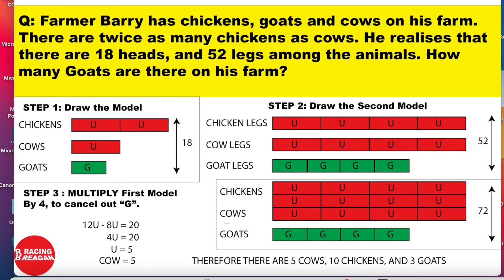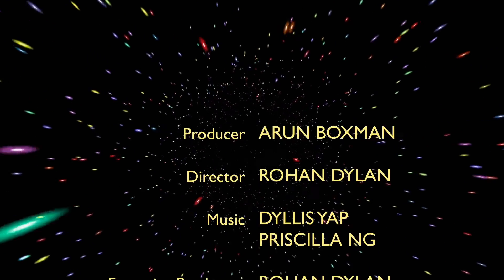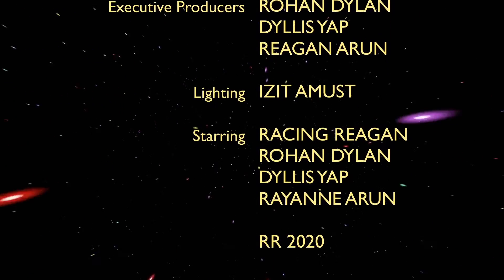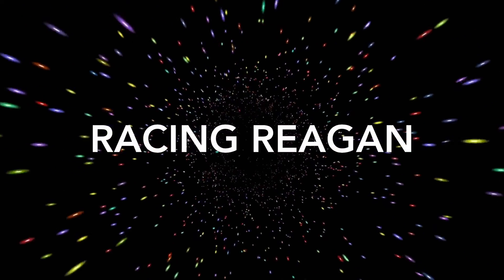Now you know how many chickens there are. Chickens have twice as many as cows, so chickens equal 10. To find the goats, since there are 18 heads total and each animal has 1 head, there are currently 15 heads accounted for (10 chickens + 5 cows). So there are 3 goats. That's how you solve the question.